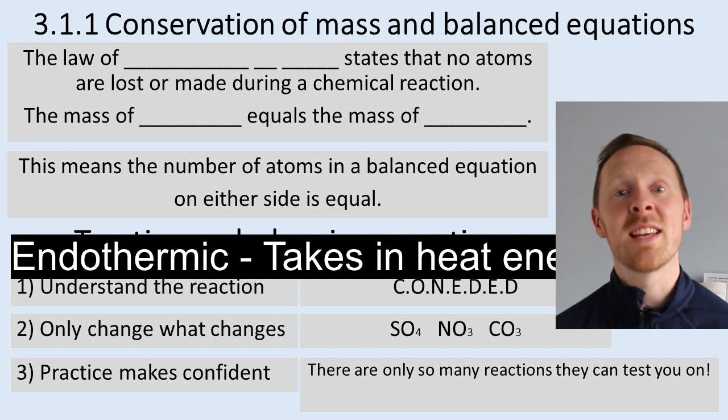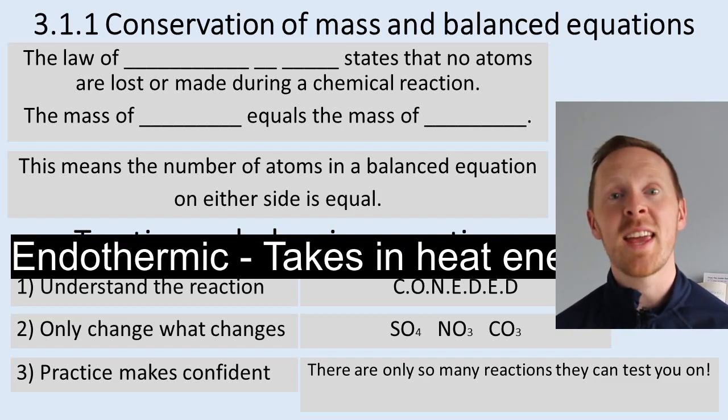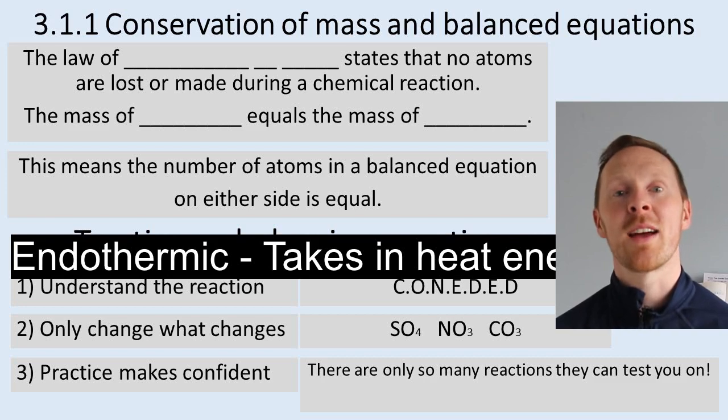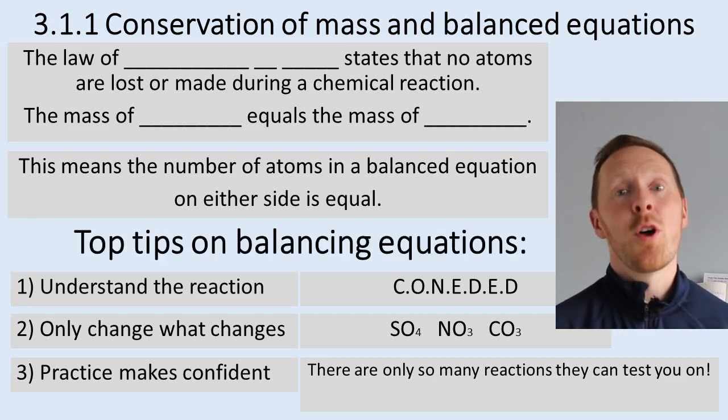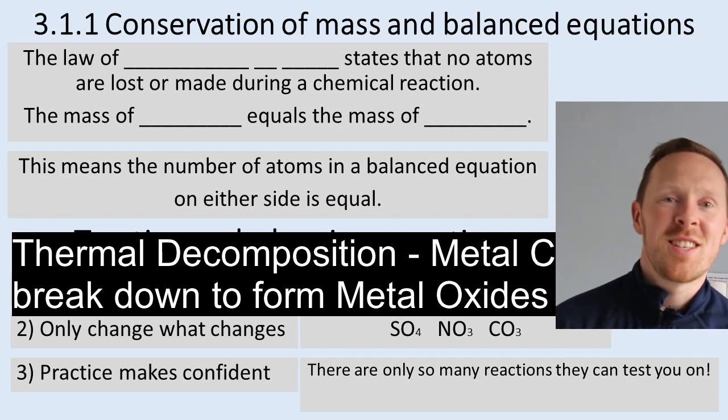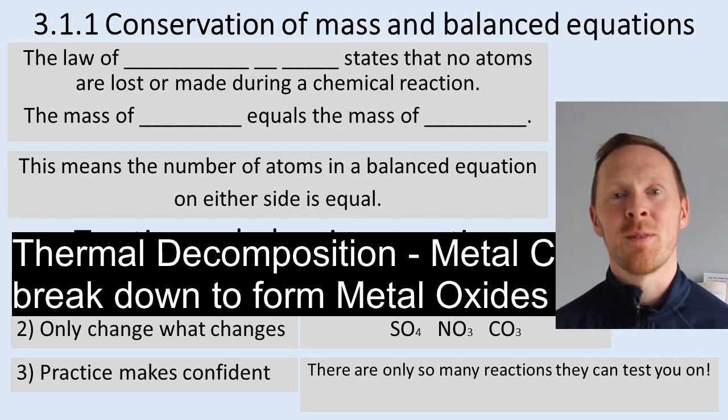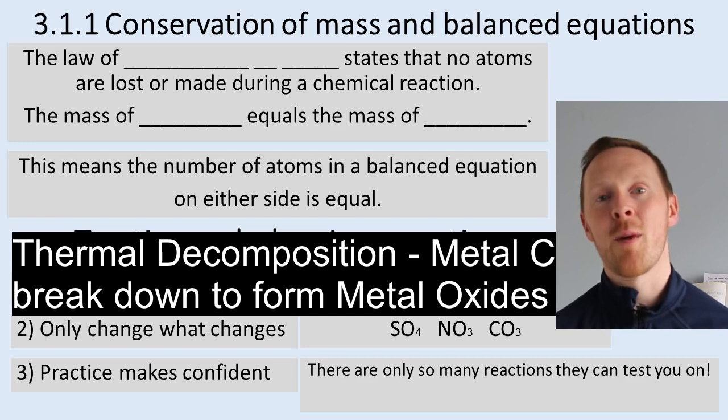The next E is for endothermic reactions, endothermic reactions that take in heat energy. For instance, an ice pack. Also, sodium hydrogen carbonate reacting with citric acid, and also thermal decomposition. They're examples of endothermic reactions. And finally, the last D is for thermal decomposition. I've missed the T out and just gone for the decomposition. That's where a metal carbonate, when heated, breaks down and forms a metal oxide and gives off carbon dioxide.